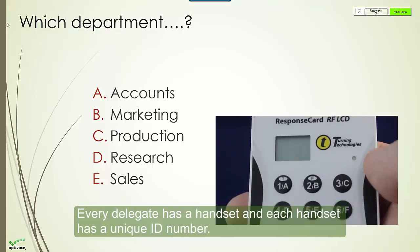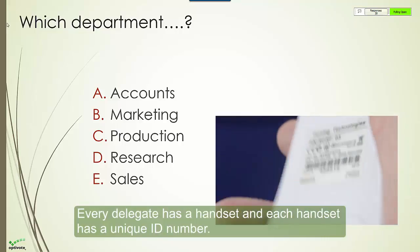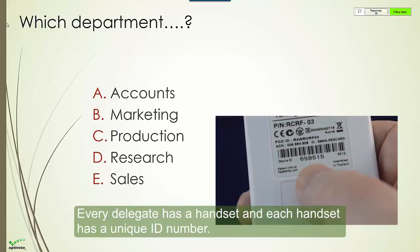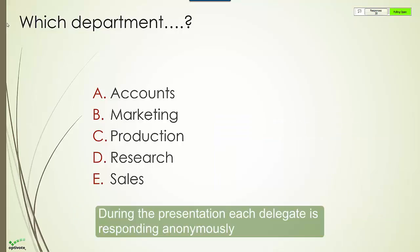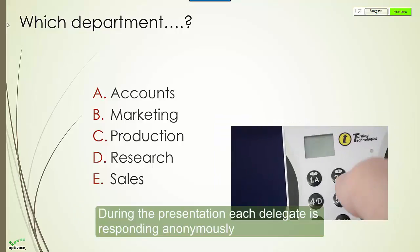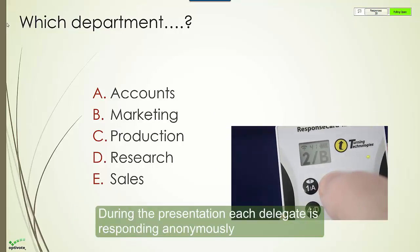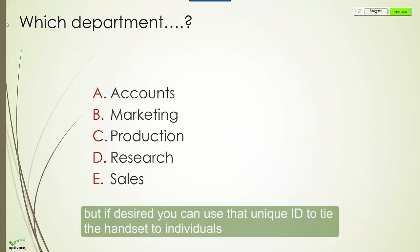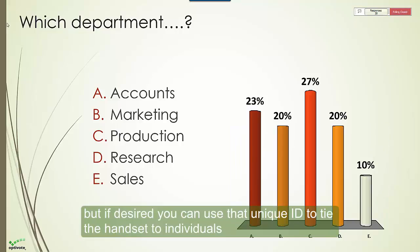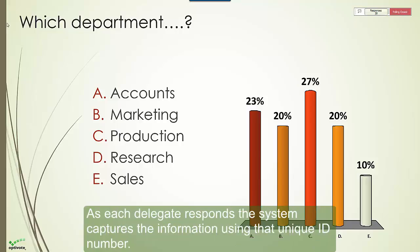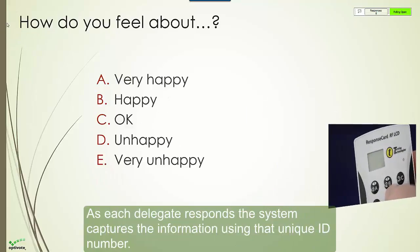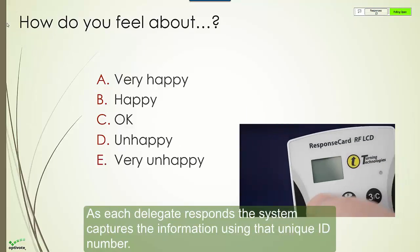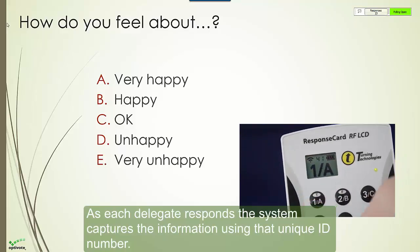Every delegate has a handset, and each handset has a unique ID number. During the presentation, each delegate is responding anonymously. But if desired, you can use that unique ID to tie the handsets to individuals. As each delegate responds, the system captures the information using that unique ID number.